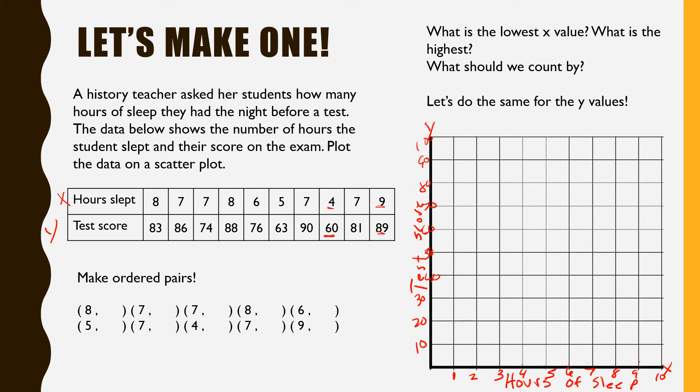Then we'll just plot these ordered pairs: eight and 83, seven and 86, seven and 74, eight and 88, six and 76, five and 63, seven and 90, four and 60, seven and 81, and nine and 89.